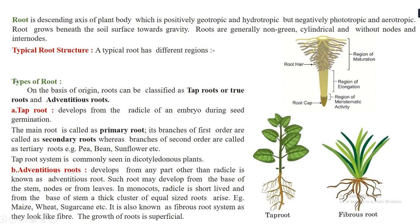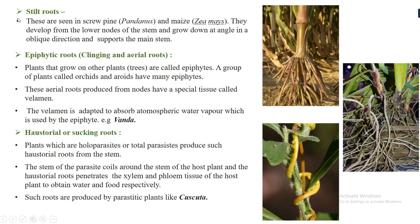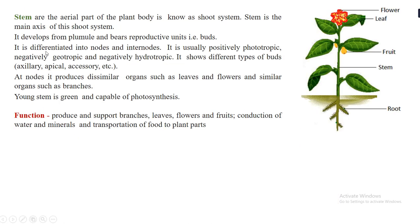So that covers roots: the typical root structure, types of root (tap root and adventitious root), and the modifications — fusiform, fasciculated, respiratory (pneumatophores), stilt root, epiphytic root, and haustorial or sucking roots. Now let us study stems.